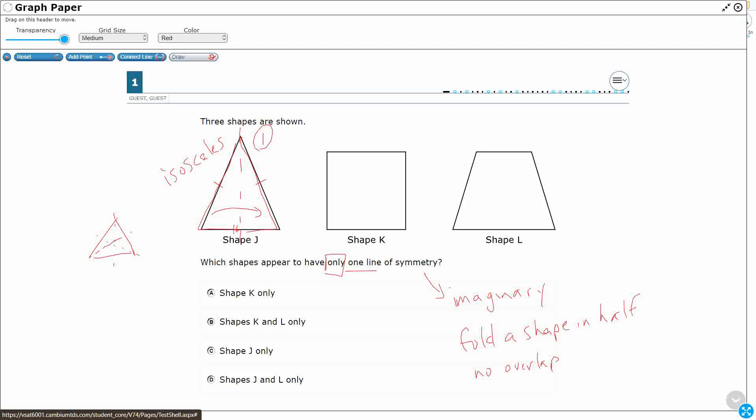So definitely it's going to involve shape J. So we're going to go ahead and get rid of those two, because it has only one line of symmetry.